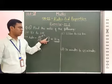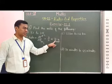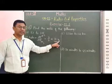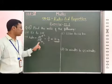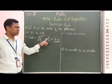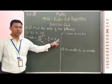Therefore, the numerator we can write first and denominator we can write second. Therefore, the ratio of these two numbers is 3 is to 4.